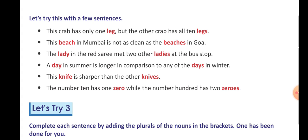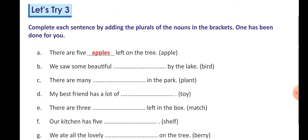For example: 'This crab has only 1 lakh but the other crab has all 10 lakhs.' Second: 'This beach in Mumbai is not as green as the beaches in Goa.' You can take the help of these examples. So you will do Let Us Try 3 yourself, and I will tell you the answers in my next video.